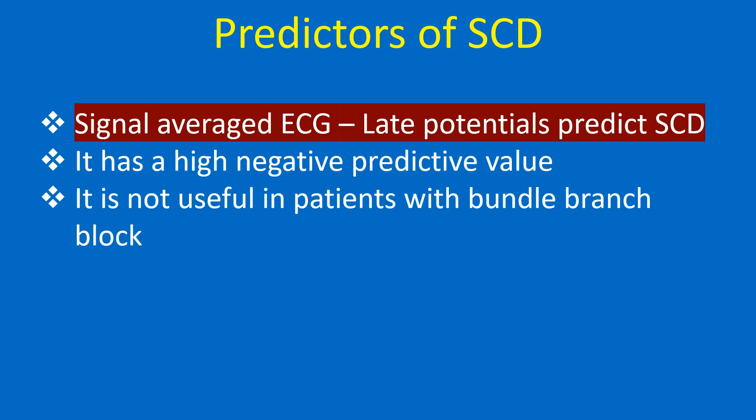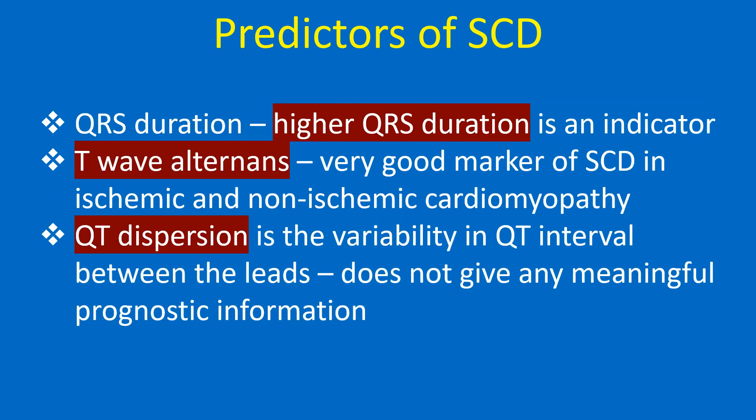Signal-averaged ECG: late potentials predict SCD and have a high negative predictive value. However, signal-averaged ECG is not useful in patients with bundle branch block.